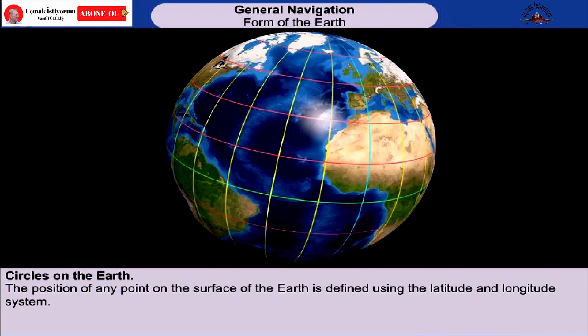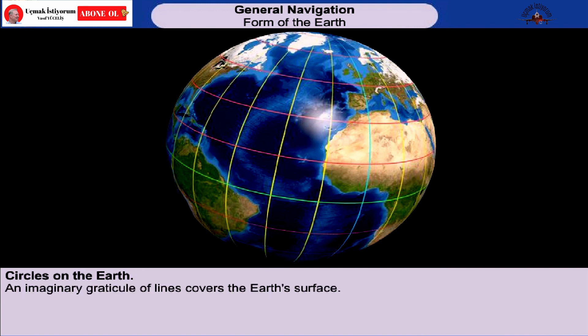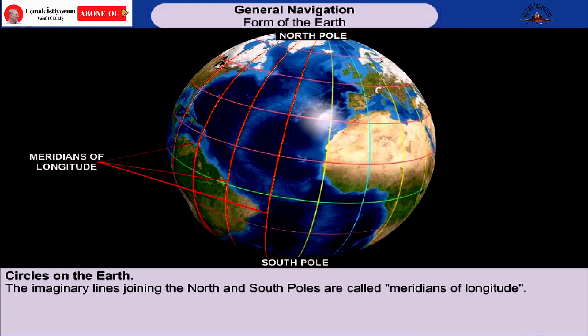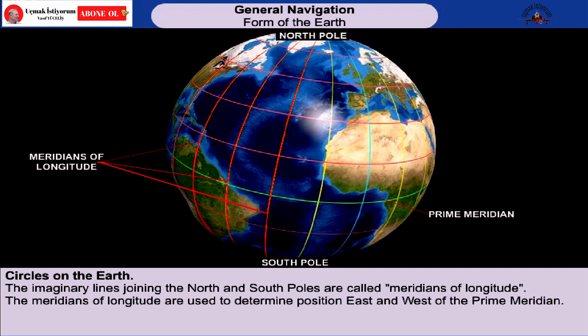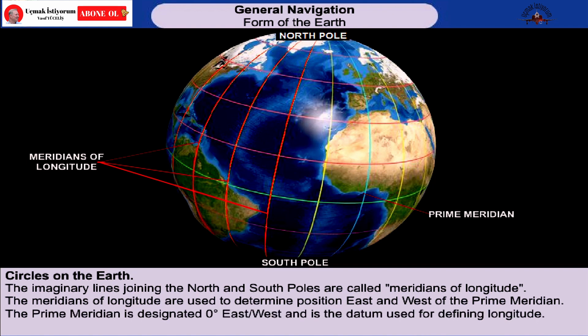We specify the position of a point on the surface of the Earth using the latitude and longitude system. An imaginary graticule of lines covers the Earth's surface. The north-south lines join the north and south poles and are called meridians of longitude. The meridian passing through Greenwich is known as the prime meridian, which is the datum for defining longitude.